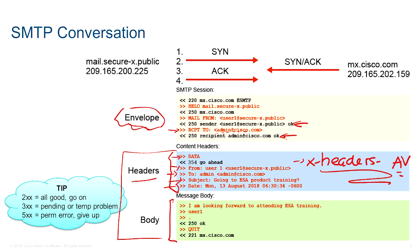Finally, we have the body of the email. According to RFC 822, the body is considered finished when there is a dot on a single line, at which point the receiving end replies with 250 — action okay and completed. The sending server then sends 'QUIT.' The Cisco server replies with 221, meaning 'service closing.'